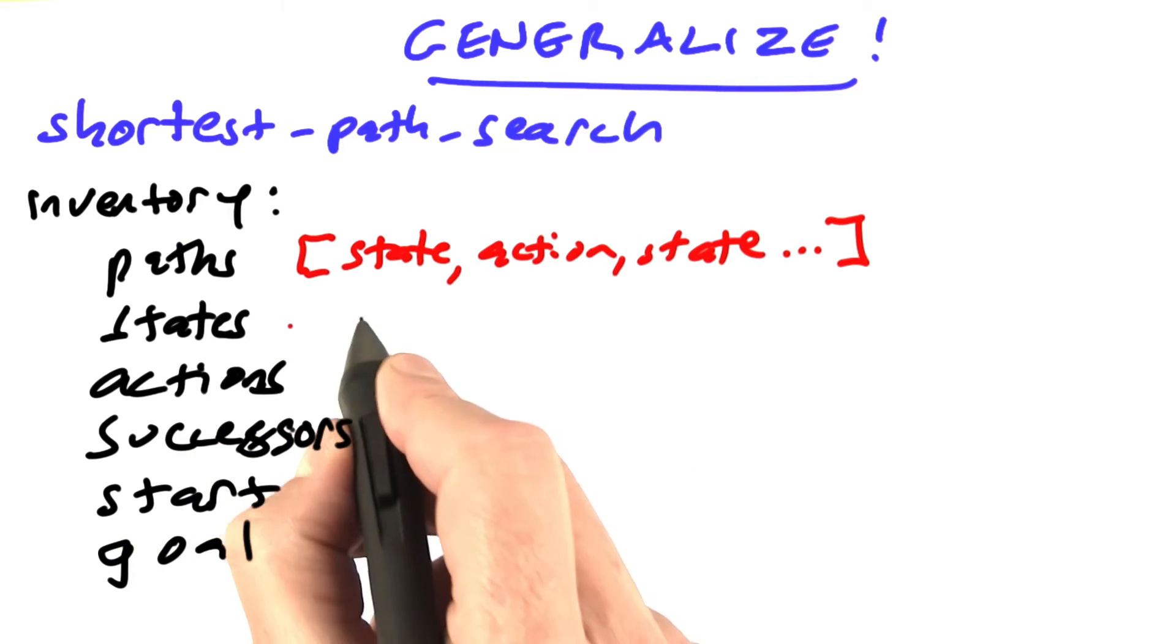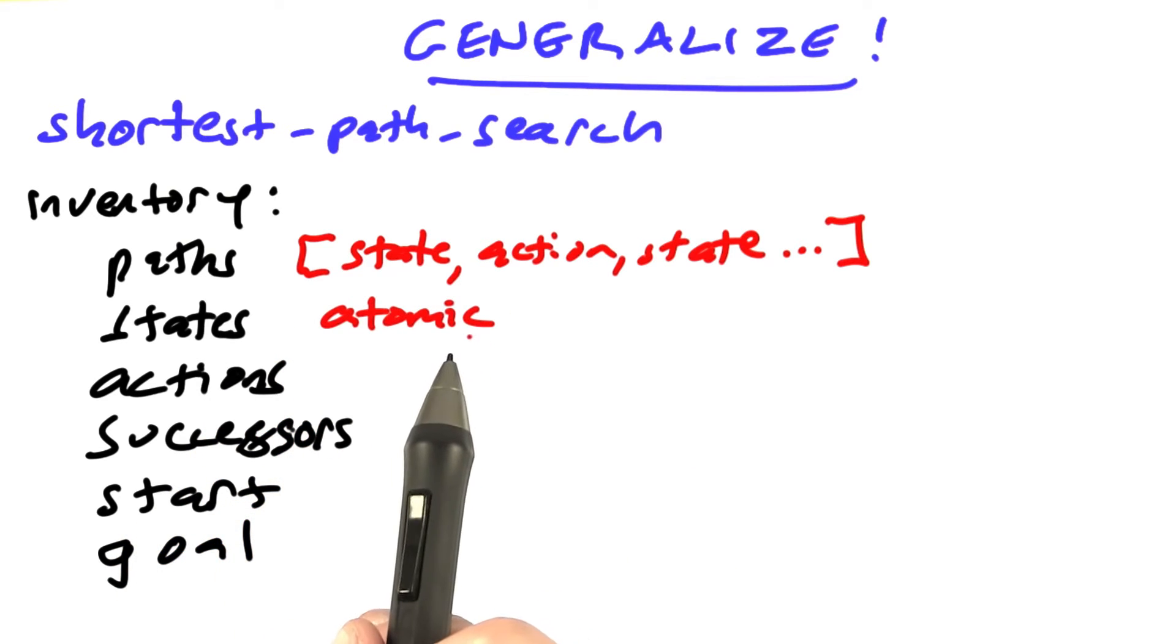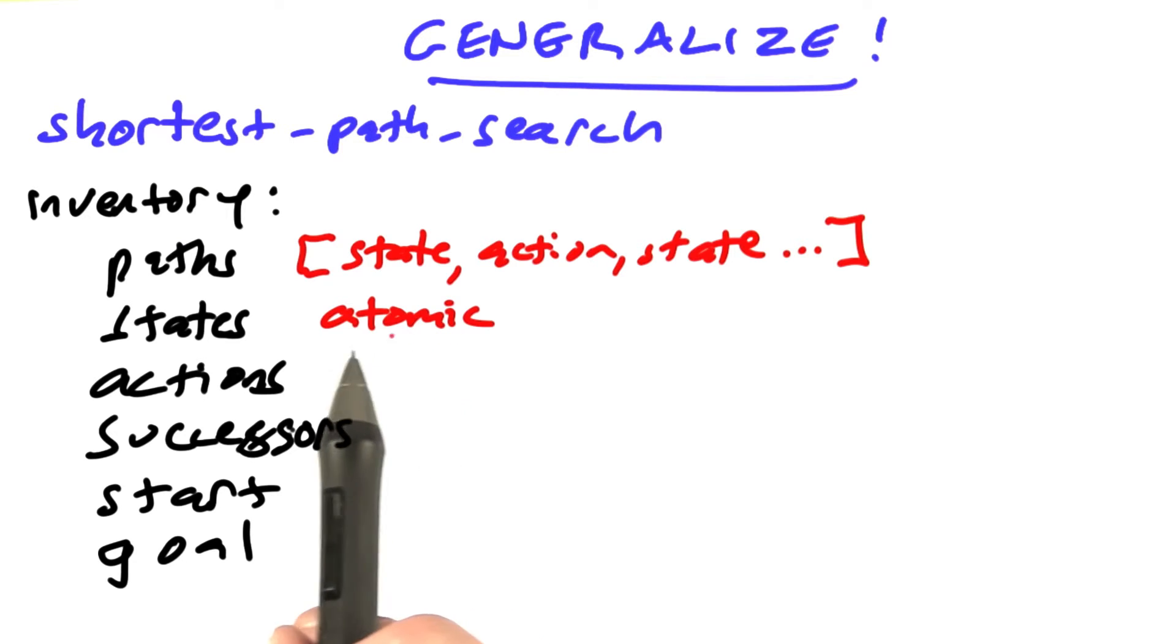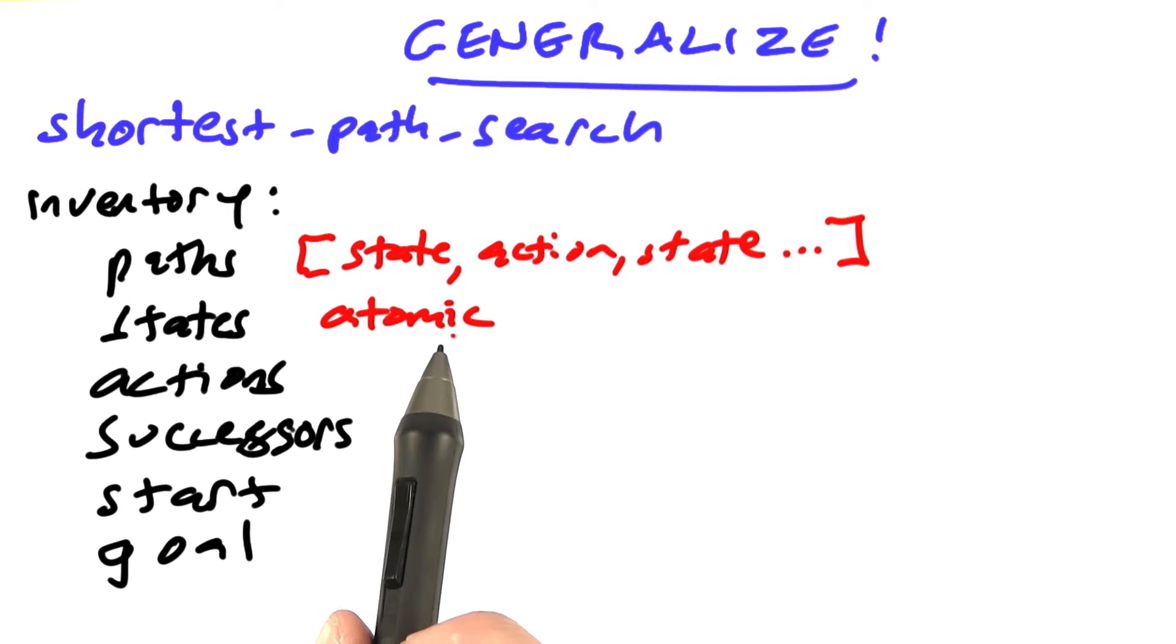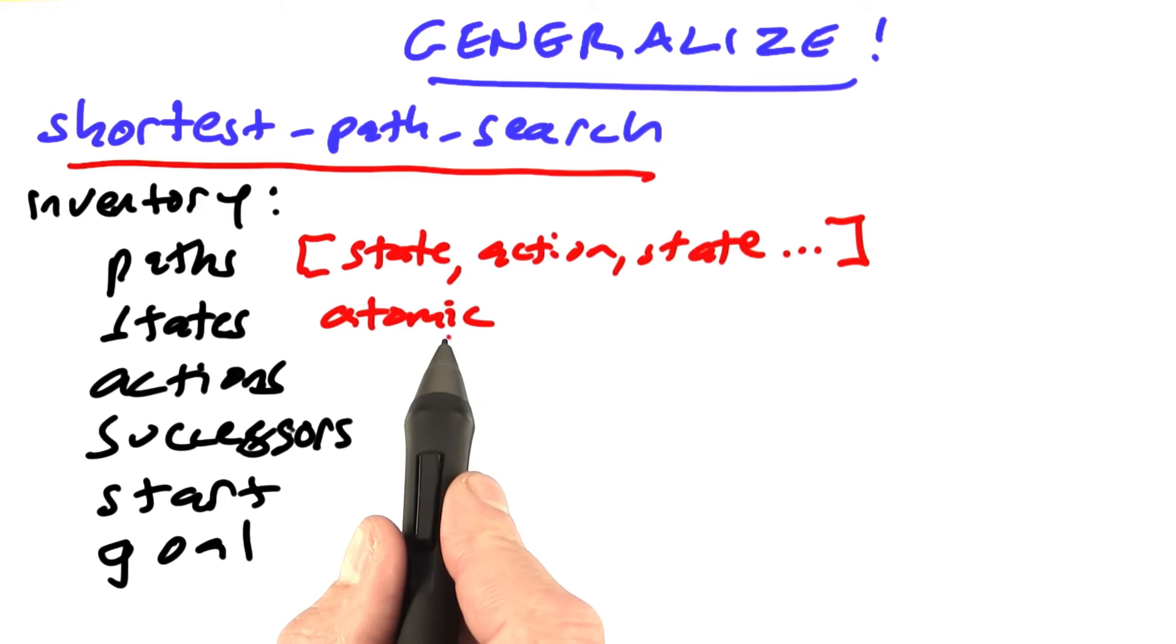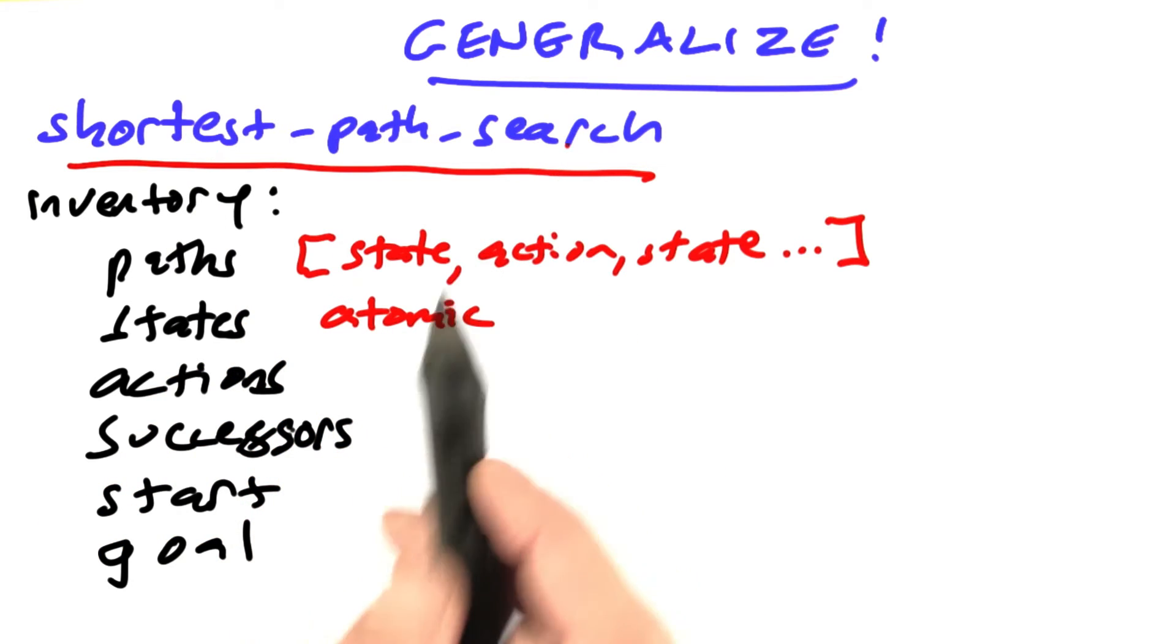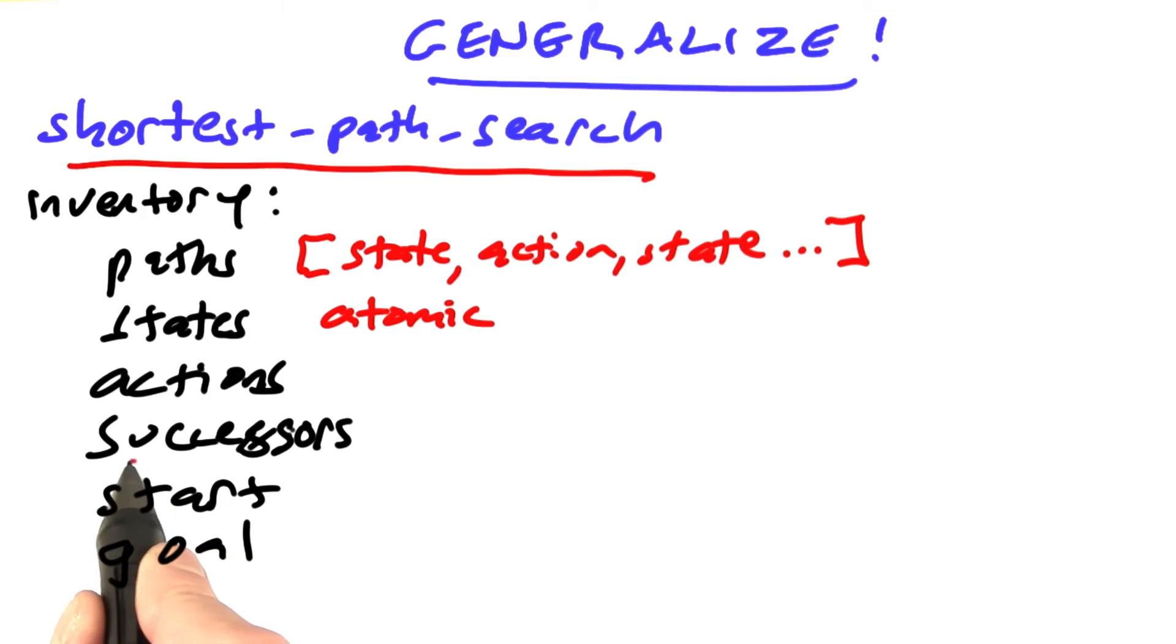We have states, and here the states can be atomic. We don't have to know anything about the states. In other words, a state can be anything that a particular problem wants to deal with, and shortest path search doesn't have to know about that. Now why is that the case? Because shortest path search can interface with states through these two functions, through successors and through the goal function, and through the start state. So the start state is going to be some atomic state. We don't know anything more about that. Shortest path doesn't know anything more about that.